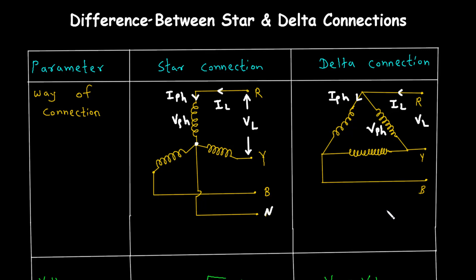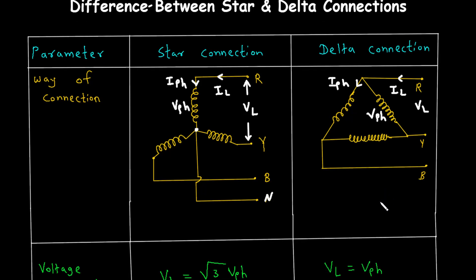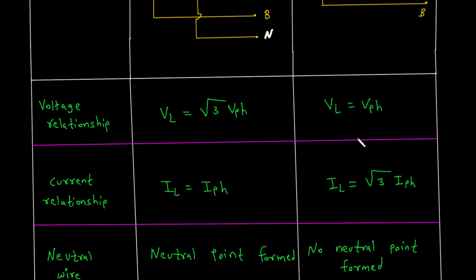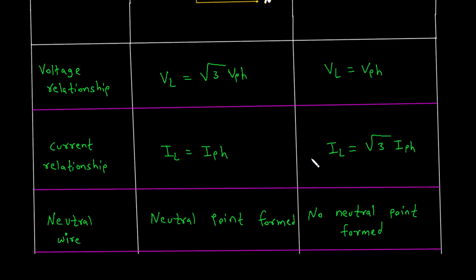To summarize, in a star connection, the line voltage is square root of three times the phase voltage, the line current equals the phase current, and a neutral point is formed. In a delta connection, the line voltage equals the phase voltage, the line current is square root of three times the phase current, and there is no neutral point.